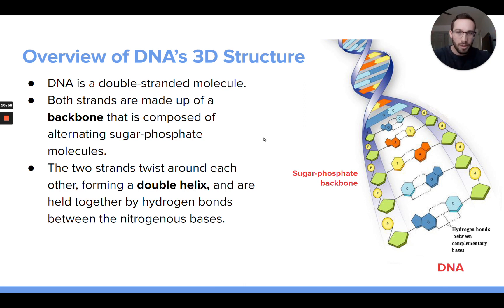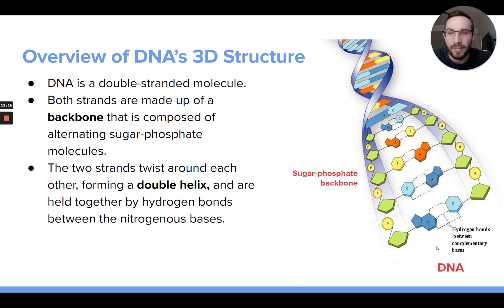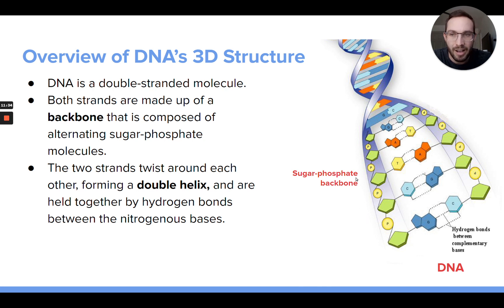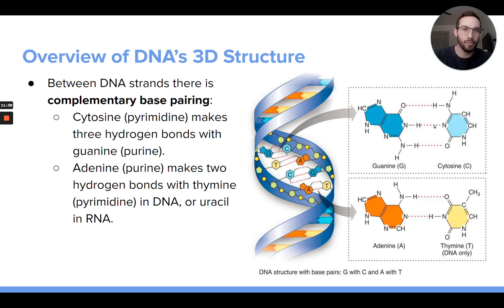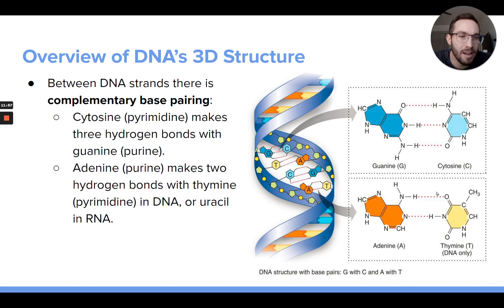To review the 3D structure of DNA, figured out in the 1950s largely by Watson and Crick: DNA is double-stranded — two strands of nucleotides. Each strand has a sugar-phosphate backbone, with sugar and phosphate groups alternating, and the nitrogenous bases pointing inward toward the middle. Hydrogen bonds form between those nitrogenous bases, holding the two strands together. This is called complementary base pairing: G always pairs with C, and A always pairs with T. Guanine and cytosine form three hydrogen bonds, while adenine and thymine form two hydrogen bonds.